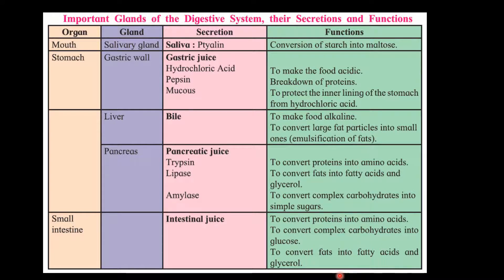Pancreas secretes pancreatic juice containing trypsin, lipase, and amylase. Its functions are to convert proteins into amino acids, fats into fatty acids and glycerol, and complex carbohydrates into simple sugars. The small intestine secretes intestinal juice, which converts proteins into amino acids, complex carbohydrates into glucose, and fats into fatty acids and glycerol.